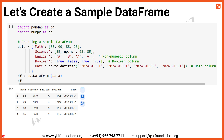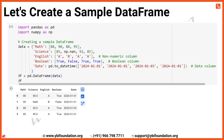Once the data is prepared, we create the DataFrame by passing the data dictionary to the pd.DataFrame function. This creates a structured DataFrame where each key in the dictionary becomes a column and the corresponding list of values becomes the data for each row.